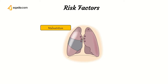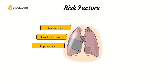Household exposure is another risk factor. When a family member acquires this disease, there are increased chances of spread. In prisoners, tuberculosis is a common disease because of overcrowding. Drug use is also a risk factor — tuberculosis is most frequently seen in people with IV drug abuse.